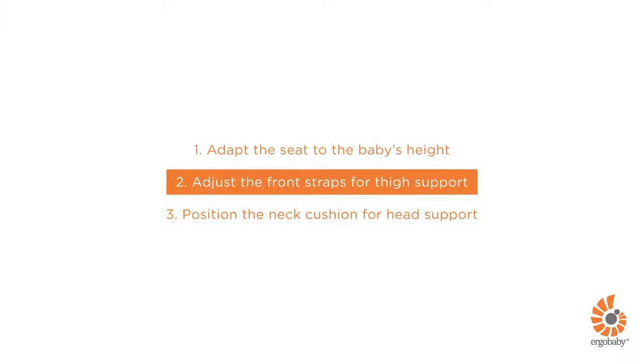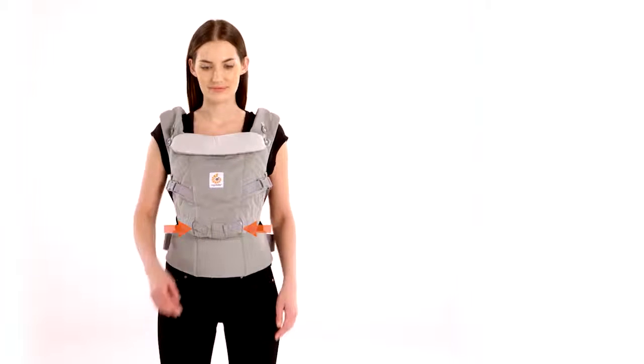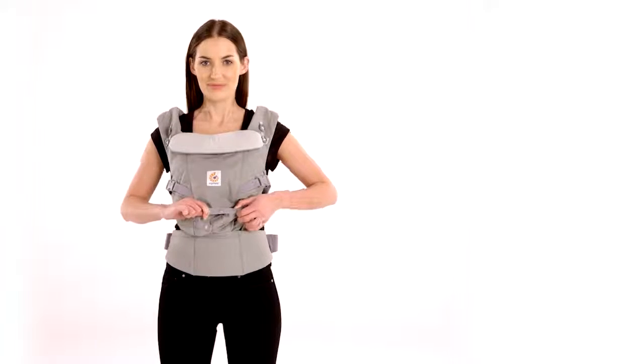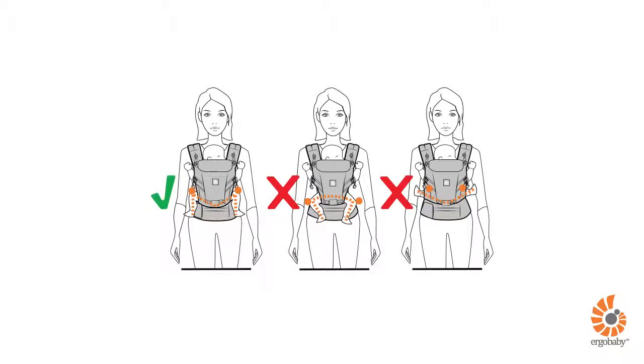Second, adjust the front straps to ensure your baby's thighs are fully supported. You can further fine-tune the seat at each stage with the two front straps to ensure baby is ergonomically seated in an M-shaped position supported from knee to knee.